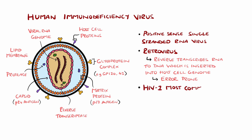HIV-1 is the most common subtype, but HIV-2 is another form that is more indolent and is mainly found in West Africa.